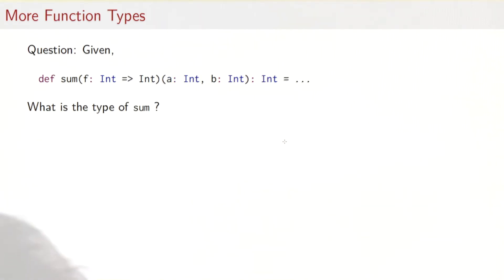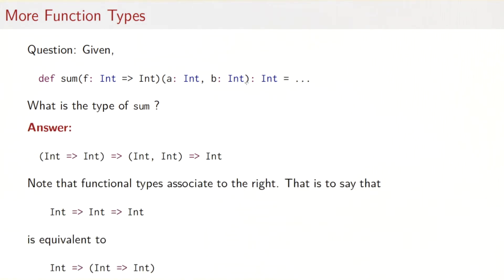So let's take one more look at types. Given this function, sum f int, and with the two arguments, what is its type? Well, the answer would be, it is a function that takes a function as argument, so that would be the argument type, and that returns a function that takes two integers as arguments, that would both be those two, and that returns finally an int.